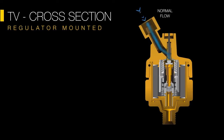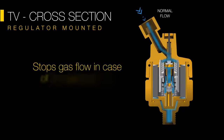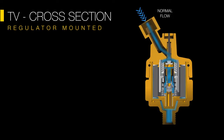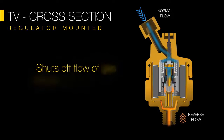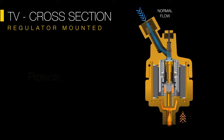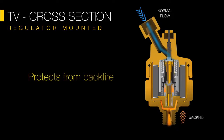The temperature sensitive valve allows free flow of gases as long as there is no temperature rise. It gets activated and cuts off flow in case of temperature rise beyond safe limits. The valve shuts off and arrests gas flow, limiting the flame from spreading.